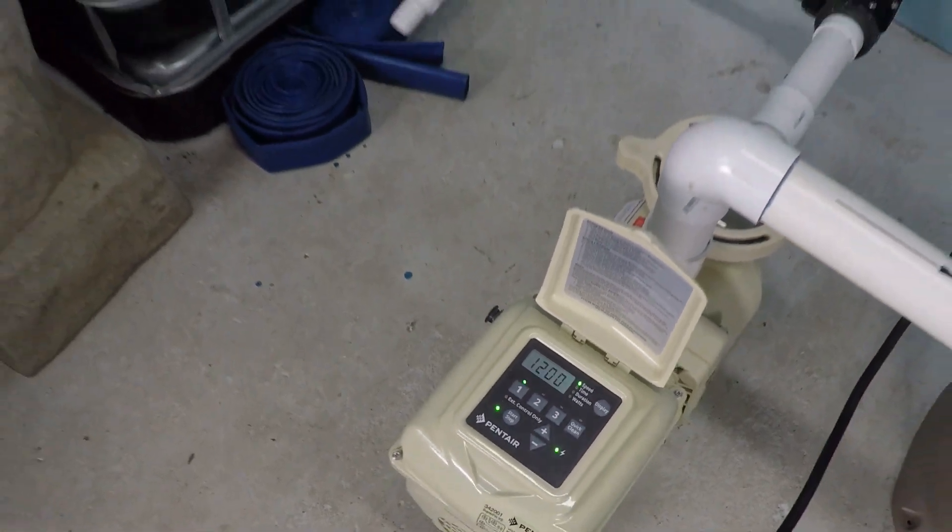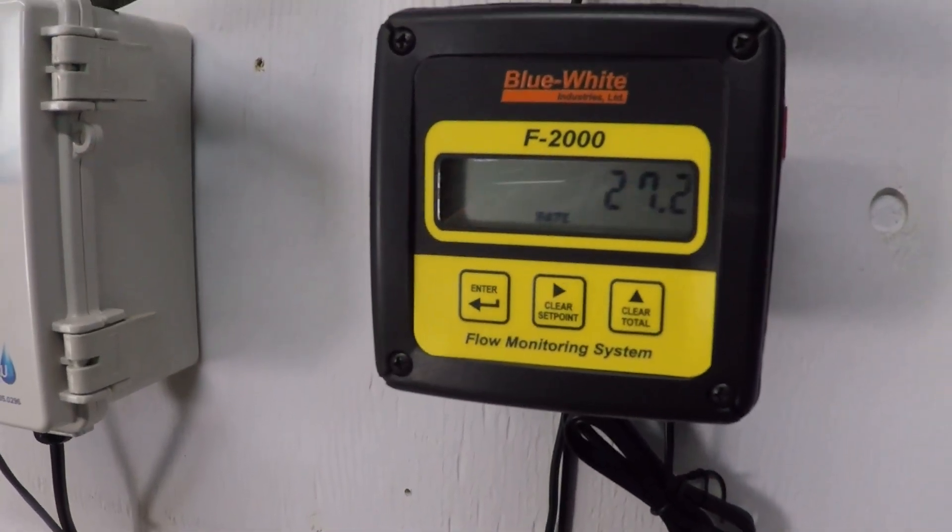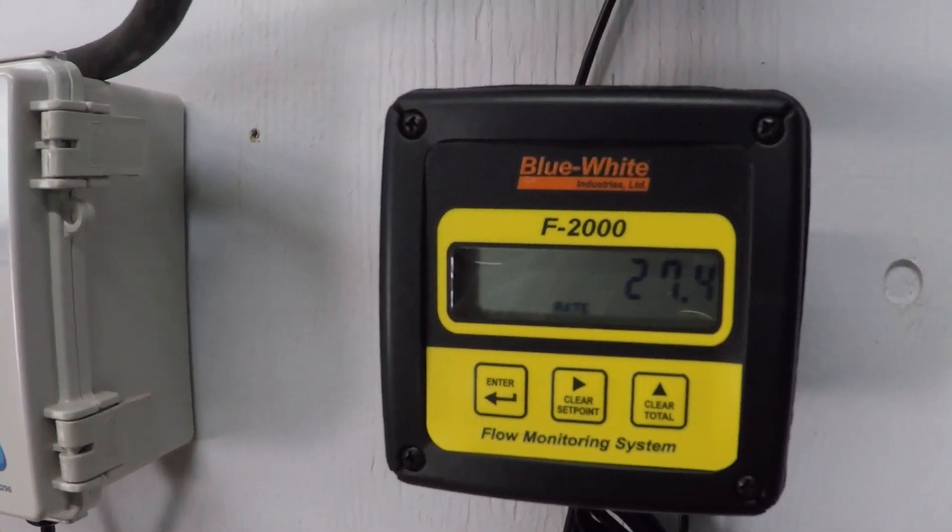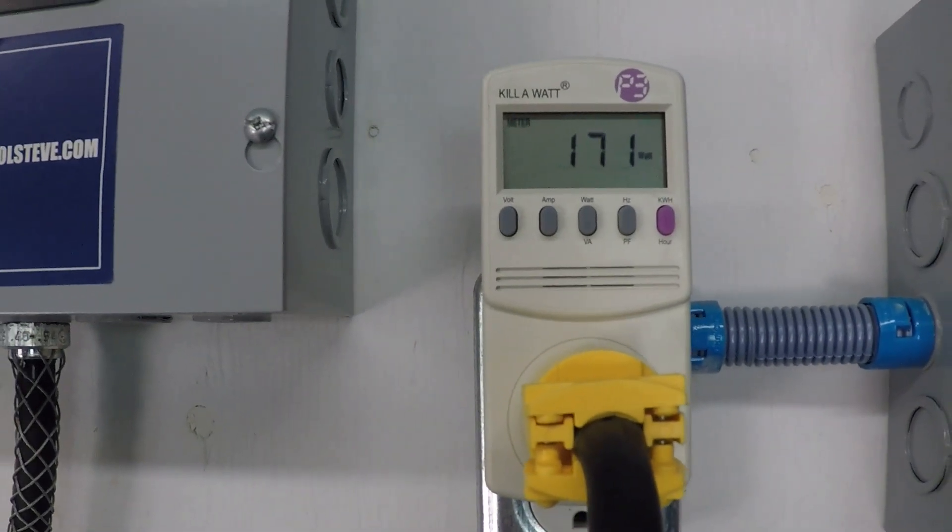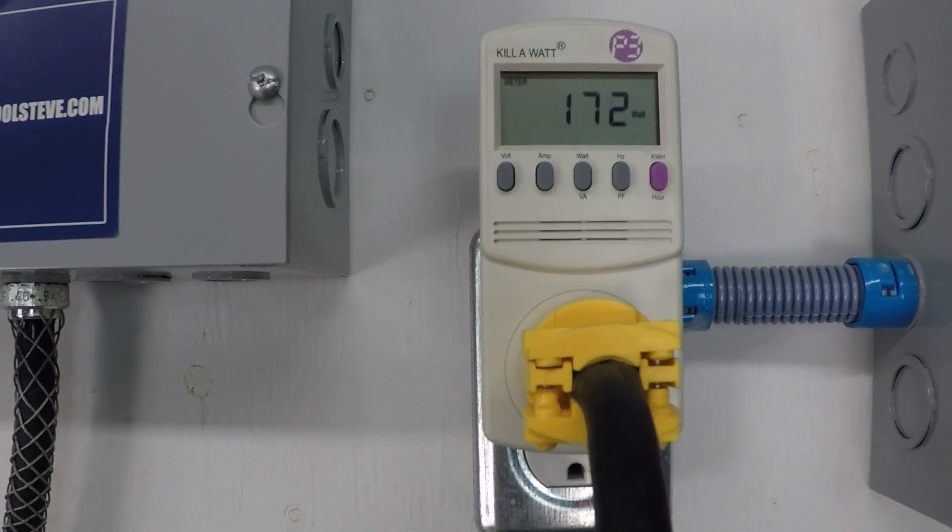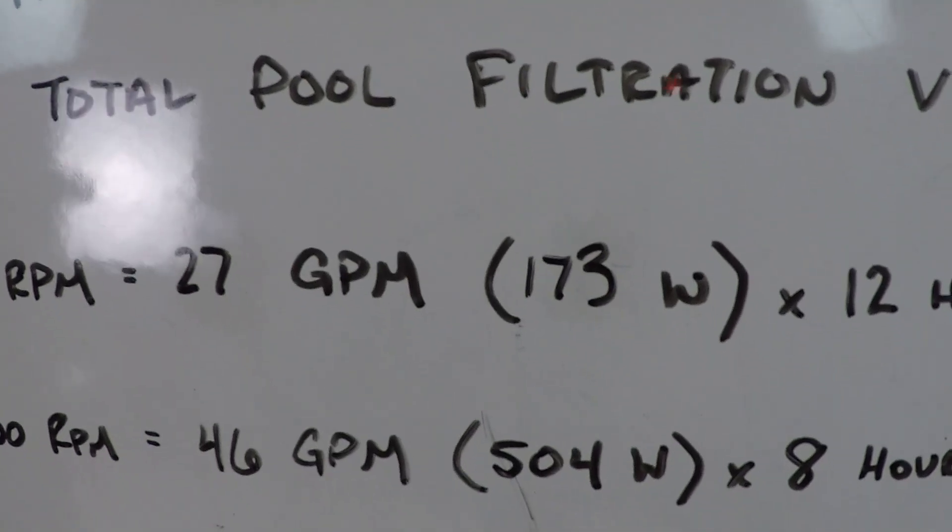We've got the pump running at 1200 RPM, just over 27 gallons per minute. Power consumption is about 173, 172 watts. And that's what we've got here.